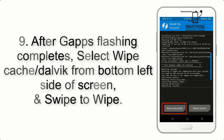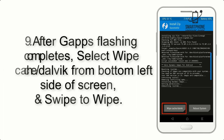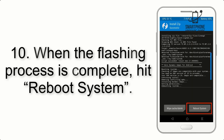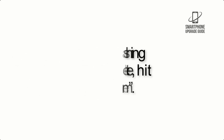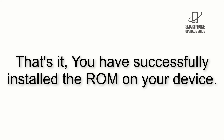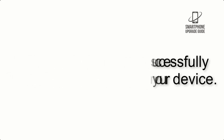Step 8: Flash the GApps zip package in the same manner. Step 9: After GApps flashing completes, select Wipe Cache and Dalvik from the bottom left side of the screen and swipe to wipe. Step 10: When the flashing process is complete, hit Reboot System. That's it — you have successfully installed the ROM on your device.